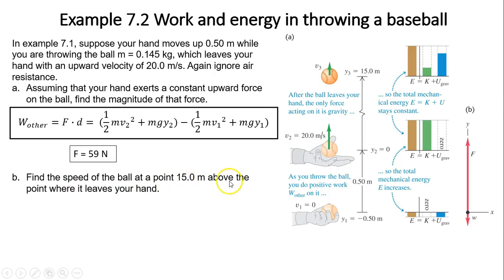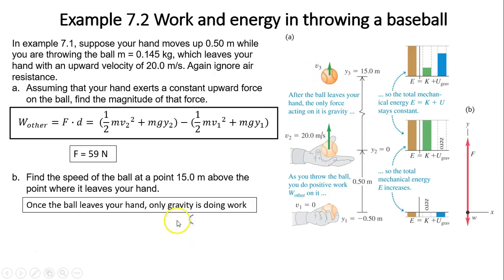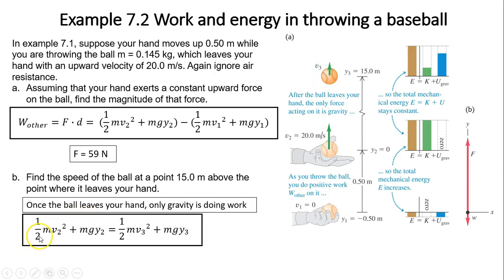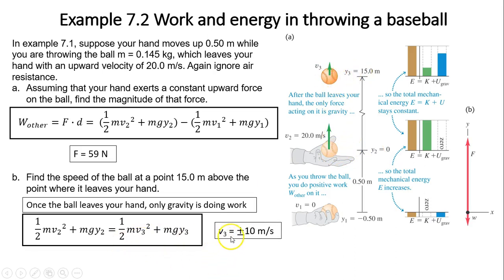Find the speed of the ball at 15 meters high. Once the ball is out of your hand, total mechanical energy is conserved: one-half M·V2 squared plus Mgy2 equals one-half M·V3 squared plus Mgy3. Position 2 is where the ball leaves the hand; position 3 is at 15 meters. Substituting everything in, V3 equals plus or minus 10 meters per second — the positive or negative means it can be moving up or down at that point.